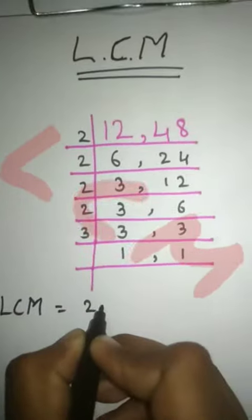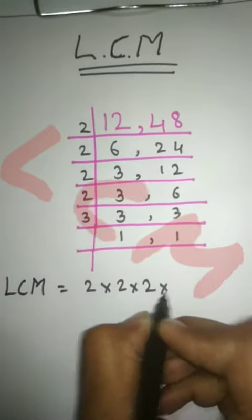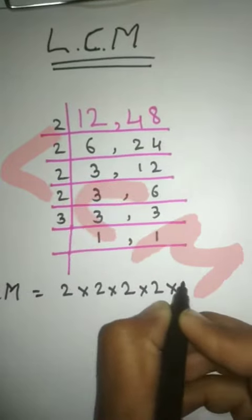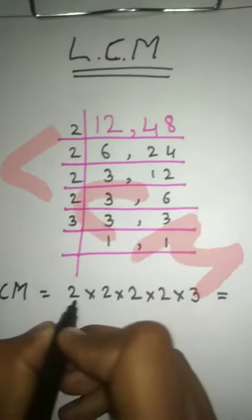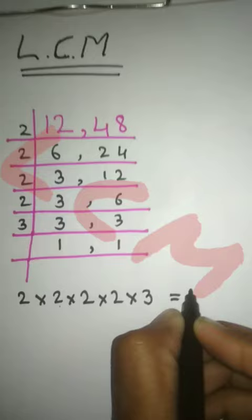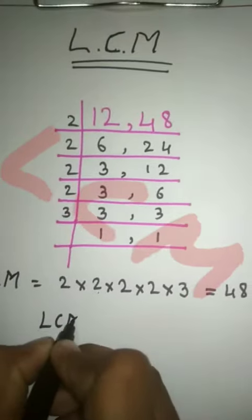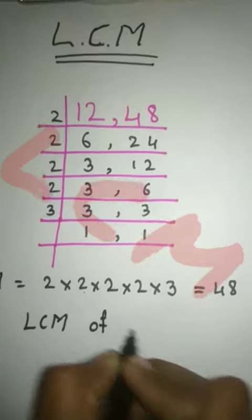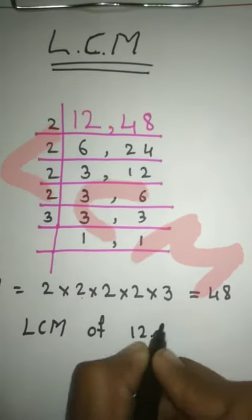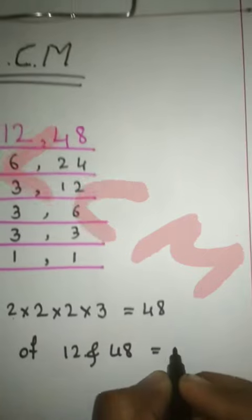LCM is equal to 2 into 2 into 2 into 2 into 3. That equals 2 times 2 is 4, 4 times 2 is 8, 8 times 2 is 16, 16 times 3 is 48. So LCM of 12 and 48 is equal to 48.